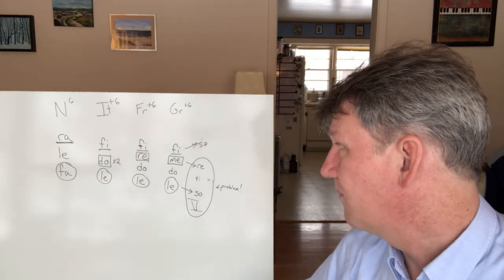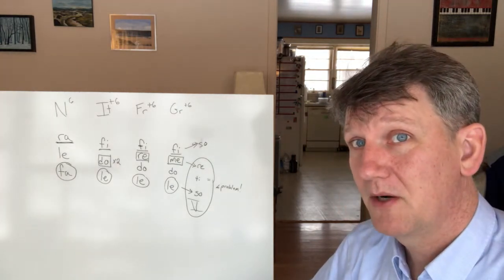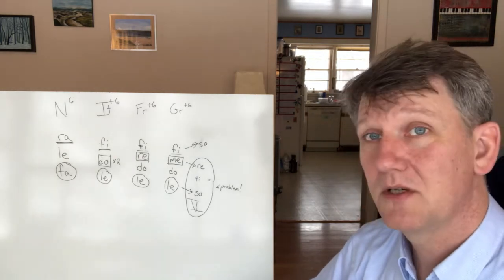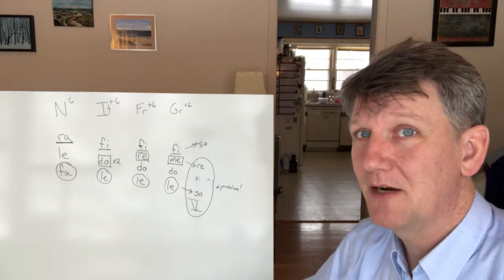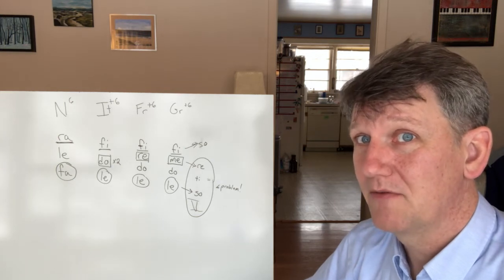So in order to avoid those parallel fifths, the German chord will usually go through a cadential six-four or some other intermediary chord before it gets to a five chord.